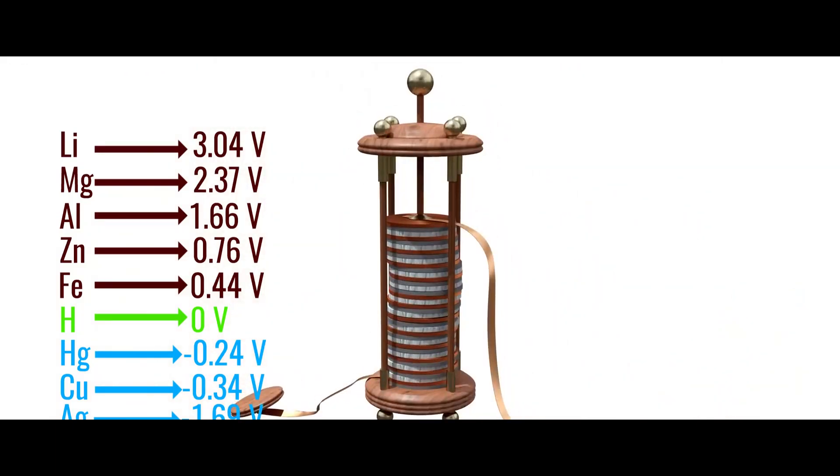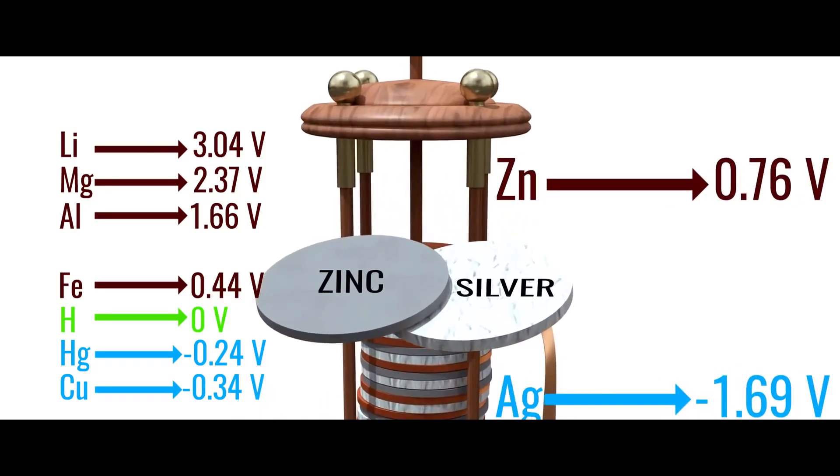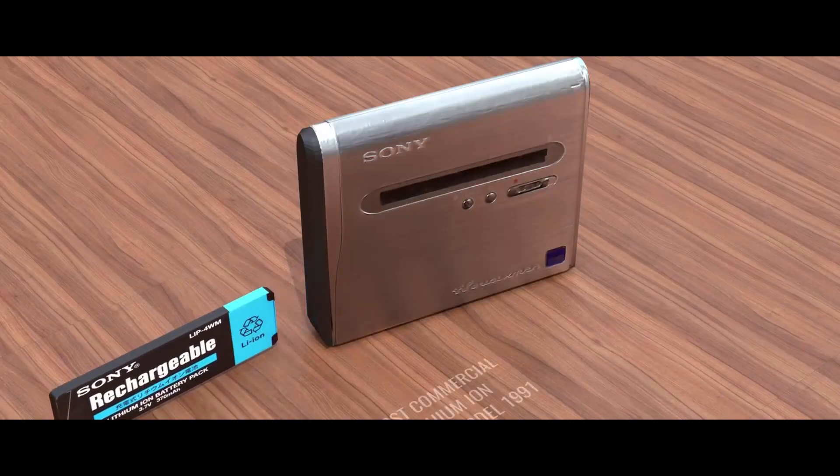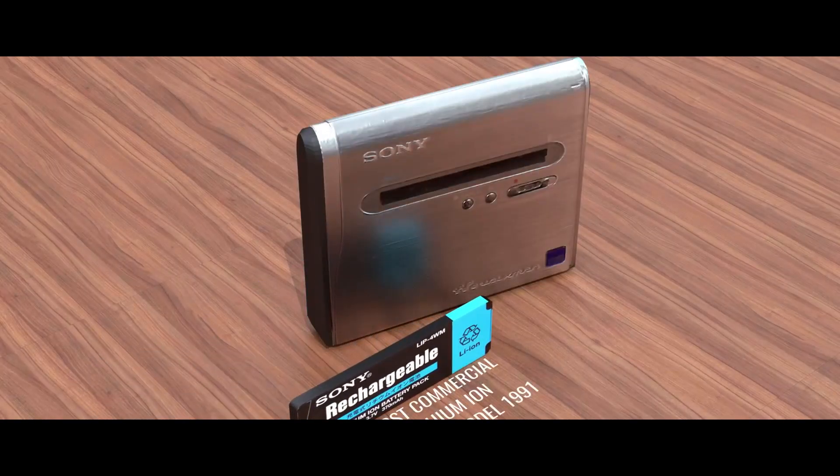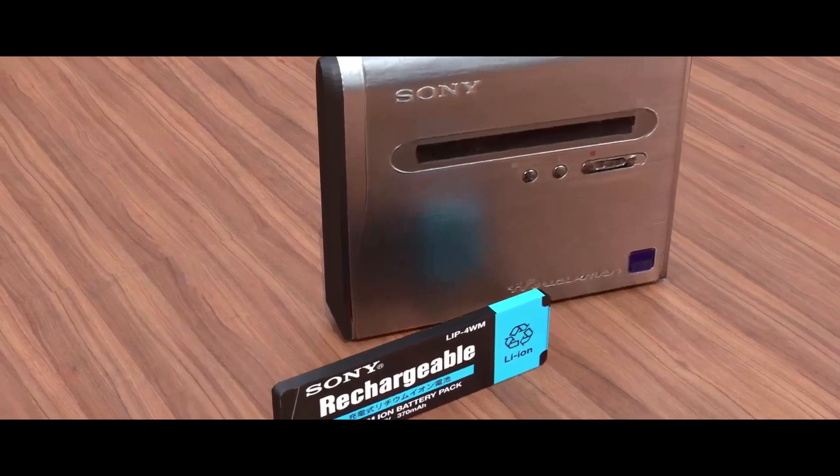Volta took two metals with different electrochemical potentials, in this case zinc and silver, and created an external flow of electricity. Sony made the first commercial model of a lithium-ion battery in 1991. It was again based on the same concept of electrochemical potential.